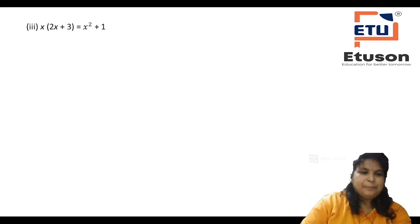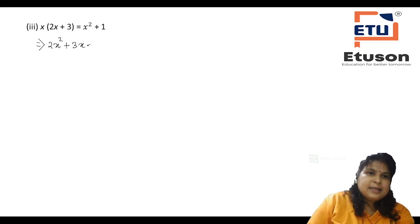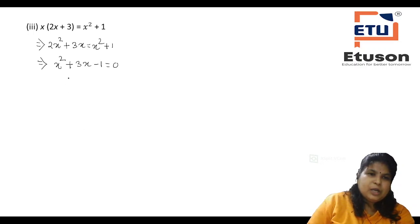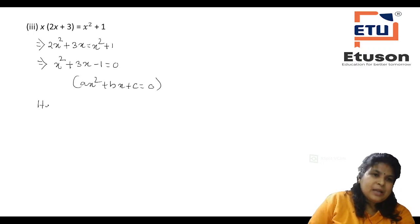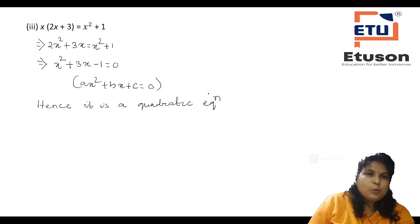Next example: X(2X+3) = X²+1. Opening the bracket: 2X² + 3X = X² + 1. Taking all variables to one side, you get X² + 3X − 1 = 0. This is in the form AX² + BX + C = 0. Hence, it is a quadratic equation.